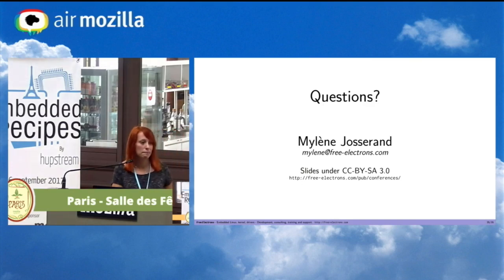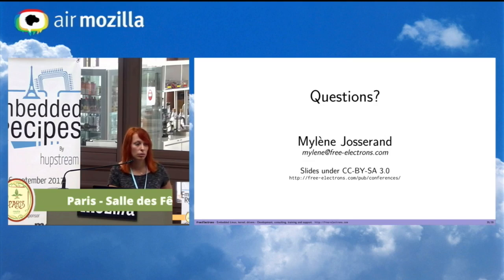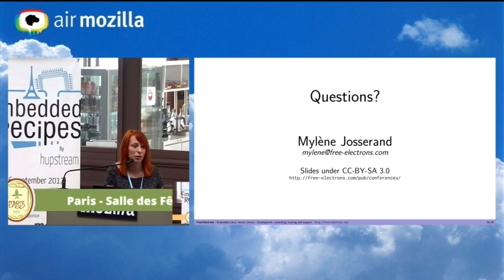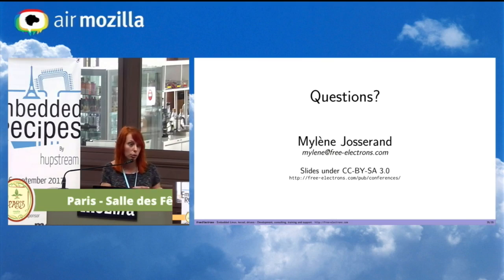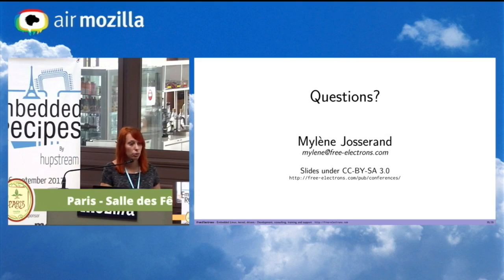Question from audience: Based on your experience, how much time does it take to create a new image from scratch? Is it 10, 15, 20, 30 minutes? Answer: It depends, but the first time it's pretty long — it can take two hours, depending on which machine you build it on. But with the Yocto project, the first build is very long, and then if you modify only one recipe, it will build only that recipe, not all the different recipes. So subsequent builds are much shorter.